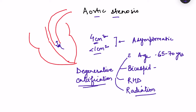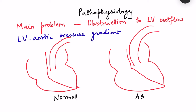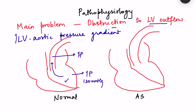Moving on to pathophysiology — the main problem in aortic stenosis is obstruction to left ventricular outflow during systole. Because of this obstruction, there is an increase in the left ventricular to aortic pressure gradient. During systole, when the heart contracts, pressure in the ventricles rises to approximately 120 mmHg. Blood flows out into the aorta, which also reaches a maximum pressure of 120 mmHg. For blood movement, there is a pressure gradient of only about 2-3 mmHg from the left ventricle to the aorta.